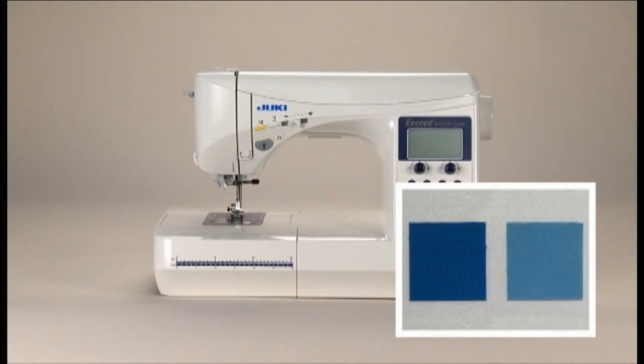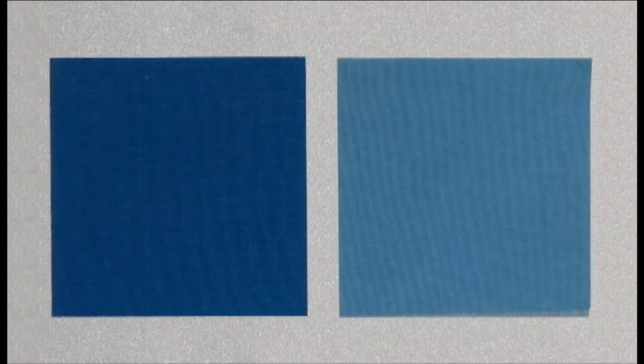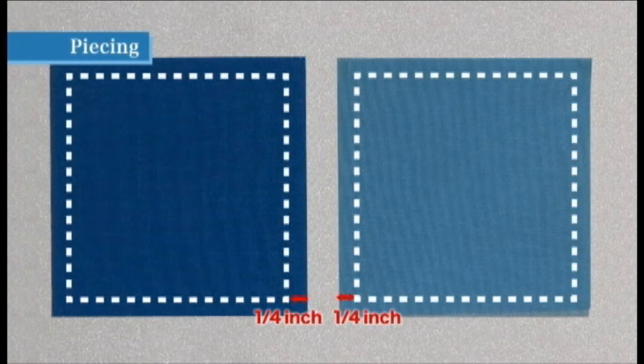Your machine can sew a wide variety of patchwork quilt patterns. Sewing pieces of cloth together is called piecing in patchwork. The seam allowance for piecing is generally quarter inch.